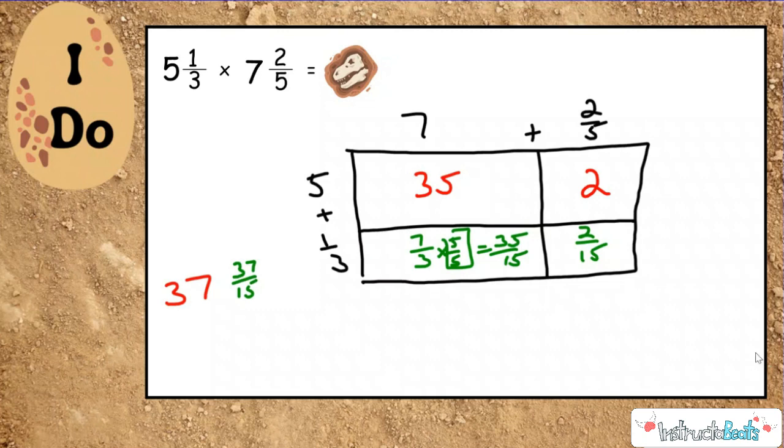Well I know that that is not a good mixed number because I don't want a mixed number with an improper fraction, so I just simply do whatever strategy you would like, and I need to convert this improper fraction to a mixed number. And when I do that, I know that I can make two wholes, which would leave me with 7/15 left over. So my product of 5 and 1/3 times 7 and 2/5 is going to be 39 wholes with a left over of 7/15.